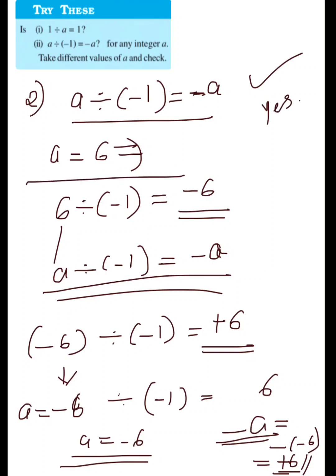You can verify: 6 divided by minus 1 equals minus 6, and minus 6 divided by minus 1 gives plus 6, which is minus A when A is minus 6. So if you take any value of A and divide by minus 1, the answer will be minus A. This is true. You can take any other values and see. That's all about the second question. Thank you.